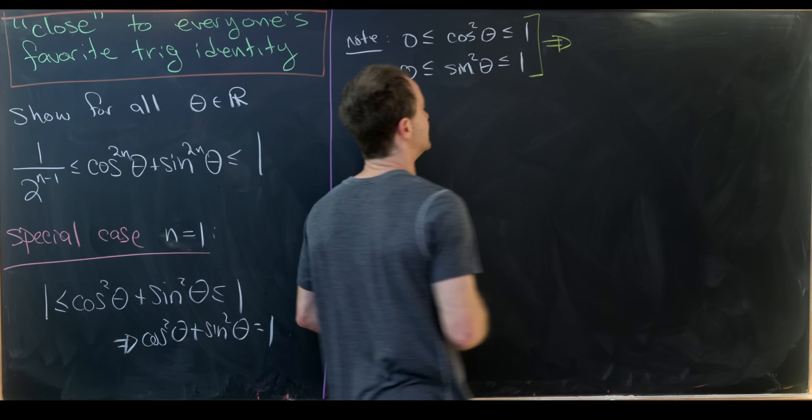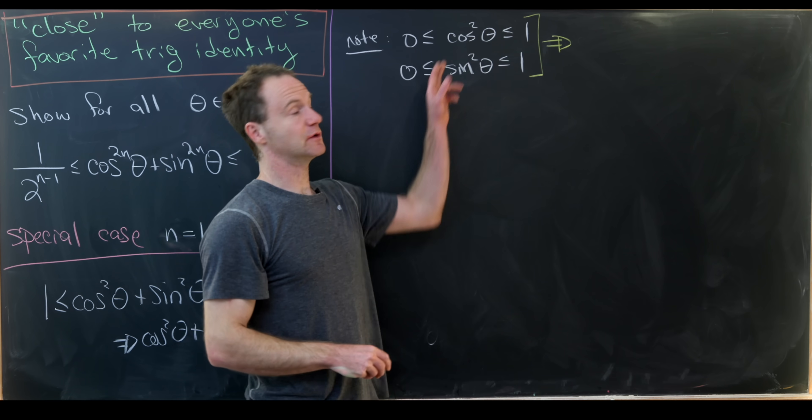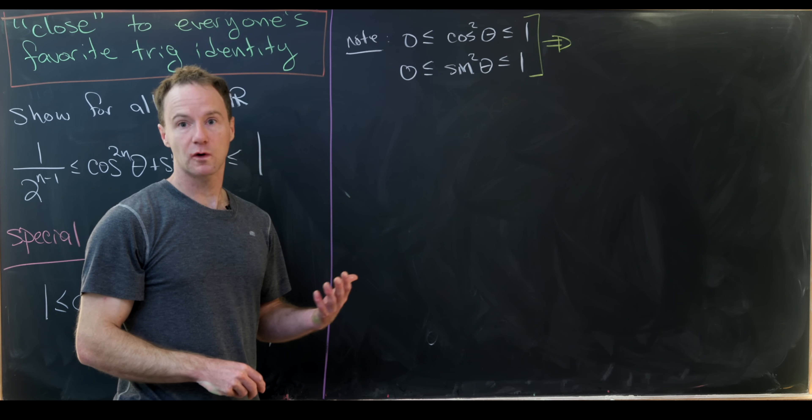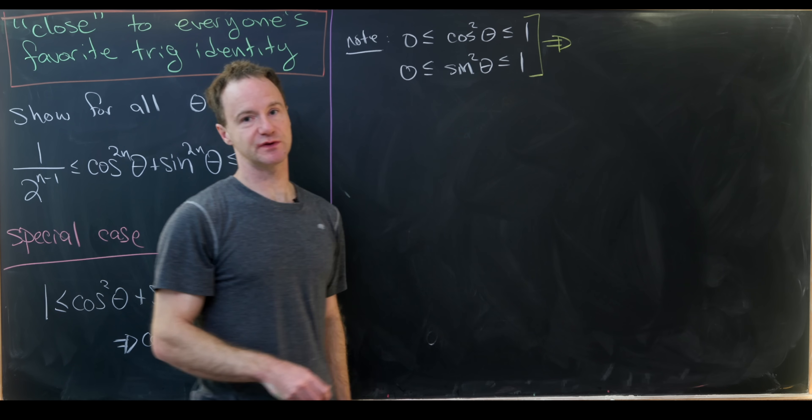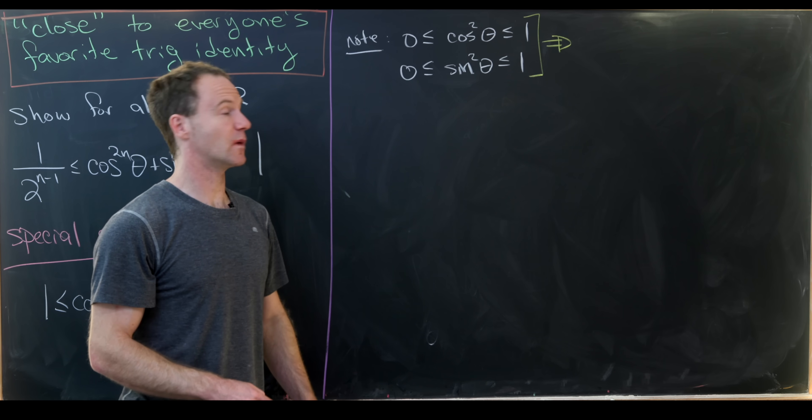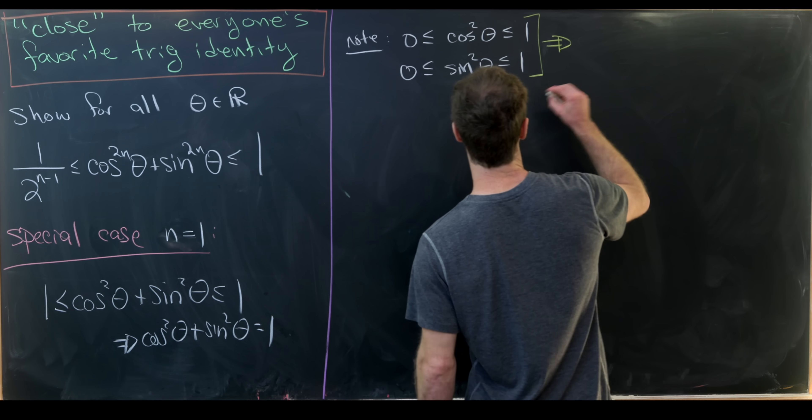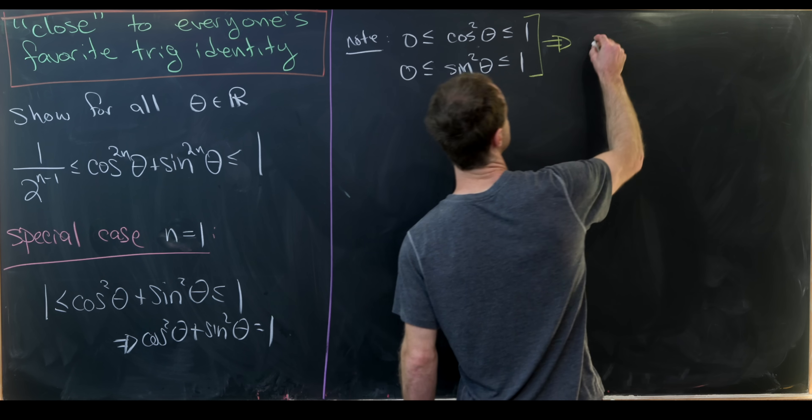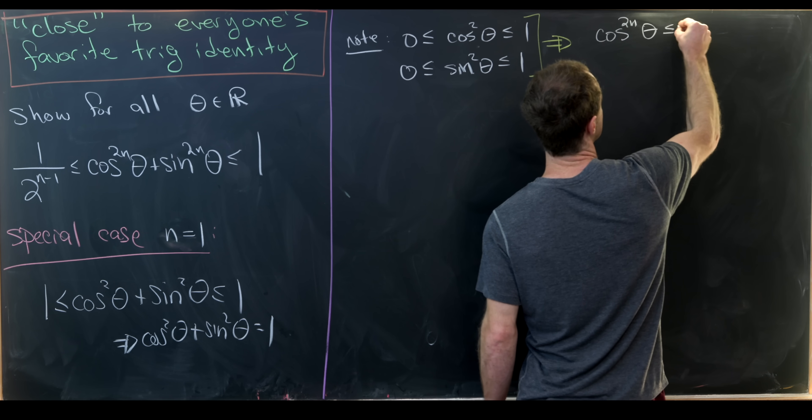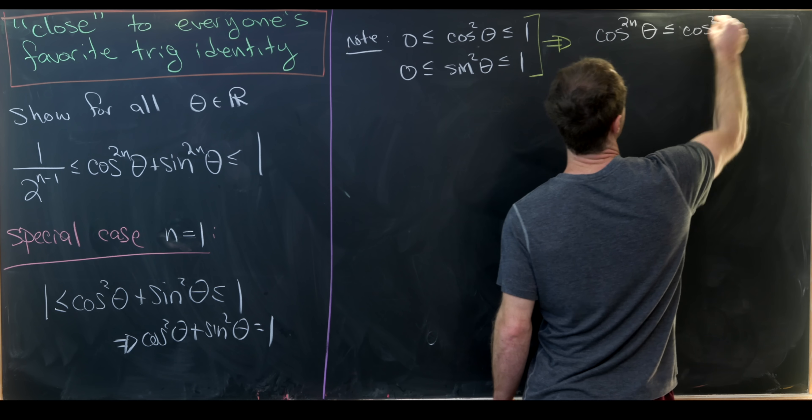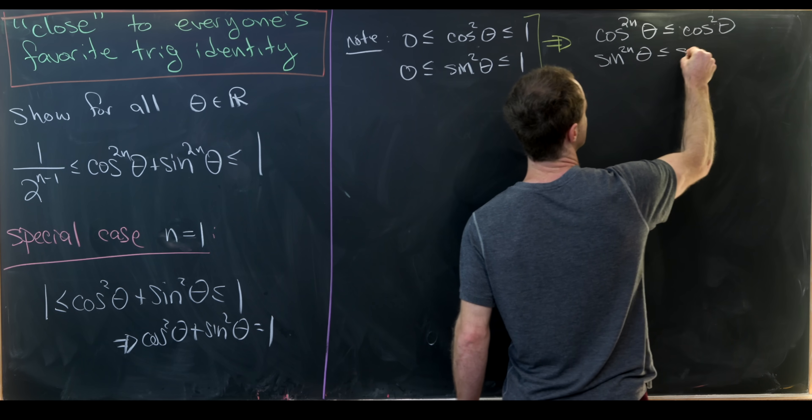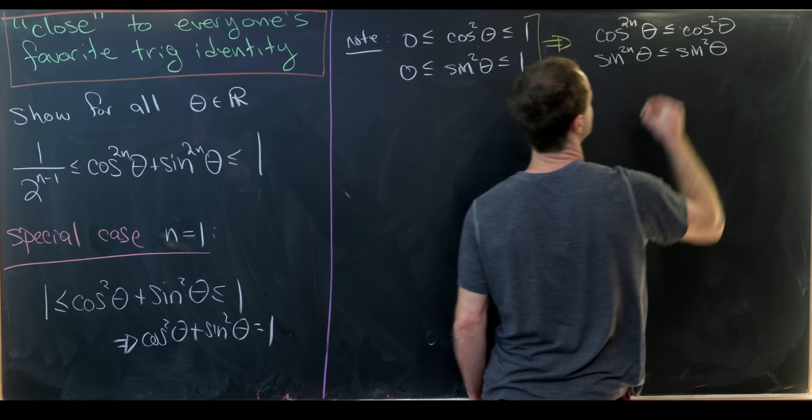But now, if you take something that's less than or equal to 1 and you raise it to the nth power, you get something smaller. Or at best, you get the same number, but that only occurs when you have 1. So that means if we raise cosine squared to the nth power, we'll get something that's smaller than or equal to cosine squared. So putting that together, we have cosine to the 2n theta is less than or equal to cosine squared theta. And likewise, sine to the 2n theta is less than or equal to sine squared theta.